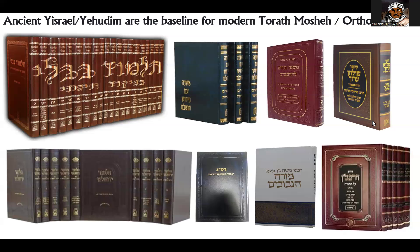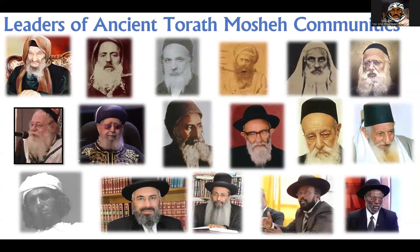If you go to any ancient Jewish community and look up the leaders of those communities, every single one of them will agree that there was an oral Torah. In this picture here, I'm basically showing you leaders from both Middle Eastern Jewish communities — Mizrahim, Temanim, Sephardim — and also from European Jewish communities — Ashkenazim — and also Ethiopian Jews. It's important to note there are people who have said for years that Ethiopian Jews didn't have an oral Torah, but I've actually looked this up — this is not true at all. They had their own form of oral Torah.